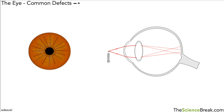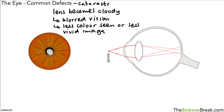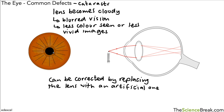We then looked at cataracts — this is when a protein forms on the lens and makes it go cloudy. We get a blurred image, possibly with less colour or less vivid images. We can correct it with a small operation to replace the lens with an artificial one, and that can restore vision back to normal again. Thanks for watching and I'll see you soon.